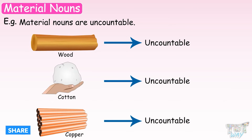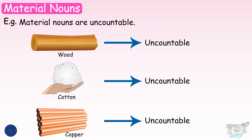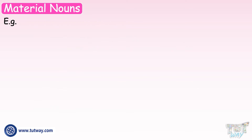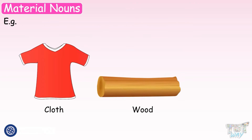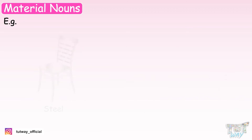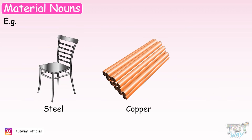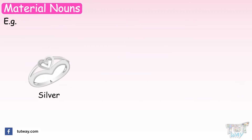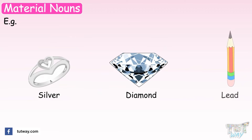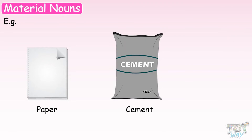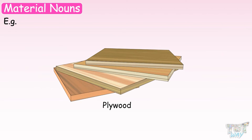Material nouns are uncountable — that is, we cannot count them, as they represent materials and not things. Now let us see some examples of material nouns: cloth, wood, iron, steel, copper, gold, silver, diamond, lead, paper, cement, paint, and plywood. All these are material nouns.